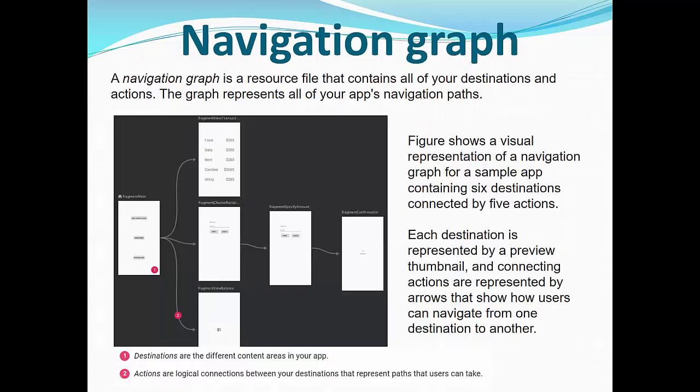You can see this example that shows a visual representation of a navigation graph for a sample application containing six destinations connected by five actions. The navigation graph is a resource that contains all of your destinations and actions. Destinations are the different content areas of the application — six visible destinations in this example.